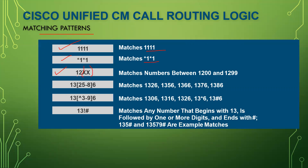So the pattern 12XX can match numbers like 1200, 1201, 1210, 1211, 1202, and so on — that means it can match numbers between 1200 and 1299.